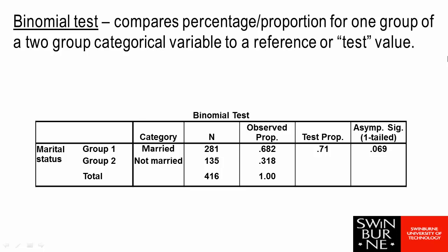In this video we are looking at the binomial test. The binomial test is used when we have a single categorical variable which has two categories and we want to compare the percentage or the proportion for one of those categories to a reference or test value, so a fixed proportion or percentage.